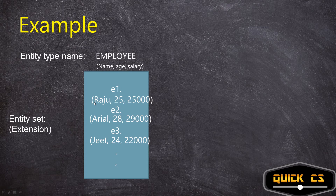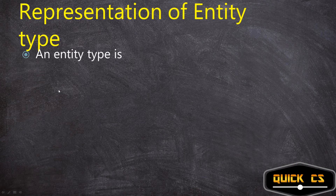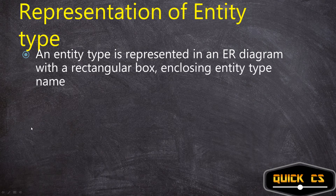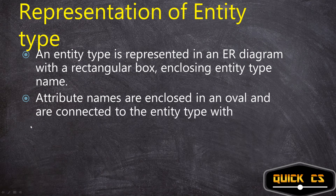For example, entity 1 represents employee Raju with age 25 and salary 25,000. The entity set is the collection of all entities of a particular entity type at any point in time — so we see all the attribute values at that point. Now, an entity type is represented in an ER diagram with a rectangular box enclosing the entity type name. If you see a rectangle in an ER diagram, it is an entity type, not an entity — we don't represent individual entities in ER diagrams, we represent entity types.